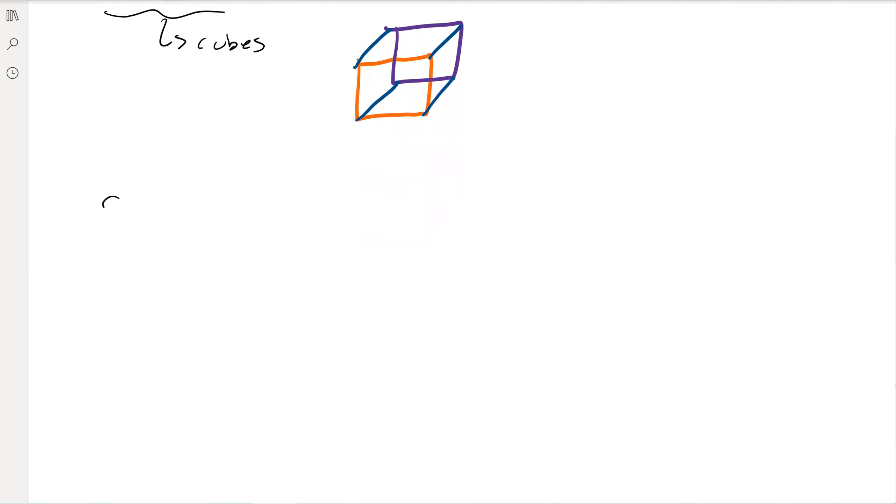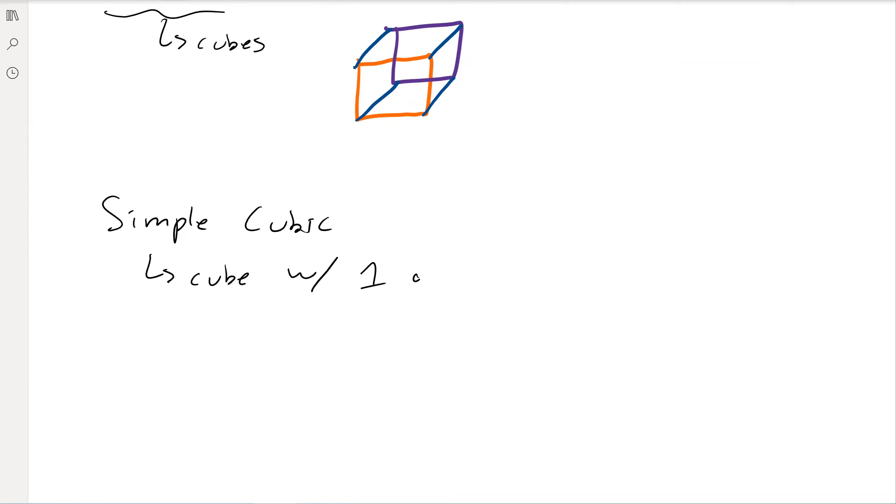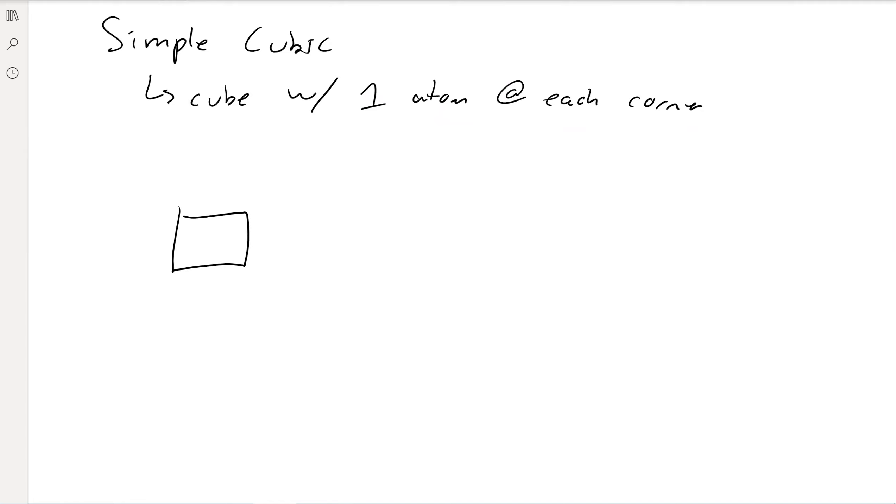The first one is simple cubic. This is basically just a cube with one atom at each corner of our unit cell. We're going to draw a square, draw an offset square, and then combine all the corners. For simple cubic, there's just one atom on each of the corners. You want to be able to draw this.